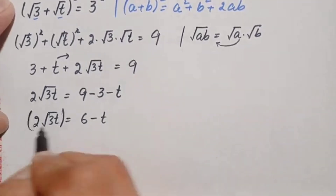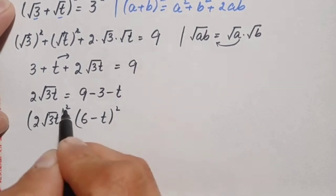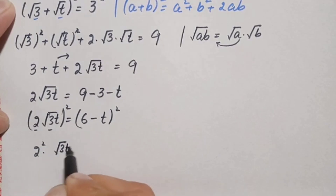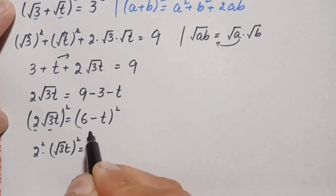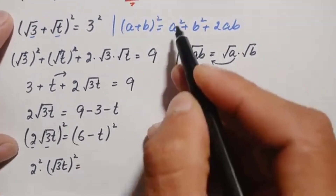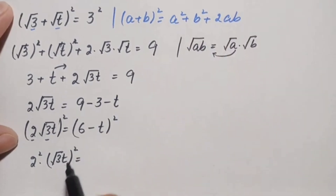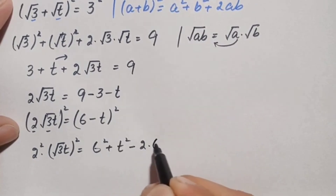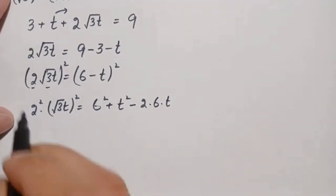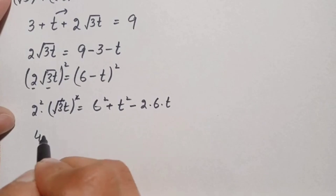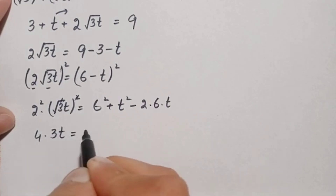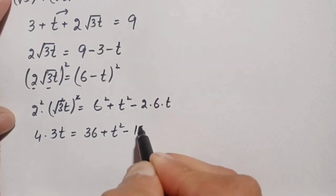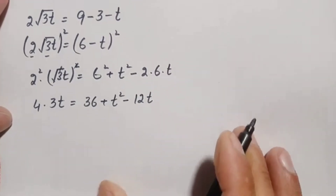Now we take the square on both sides again. On the left, 2 squared times square root of 3t whole square. On the right, we apply the (a minus b) whole square identity, which is a squared plus b squared minus 2ab. This gives: 4 times 3t equals 6 squared plus t squared minus 2 times 6 times t. Simplifying: 12t equals 36 plus t squared minus 12t.